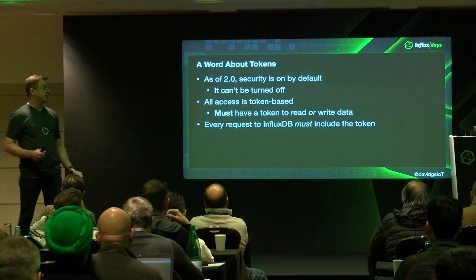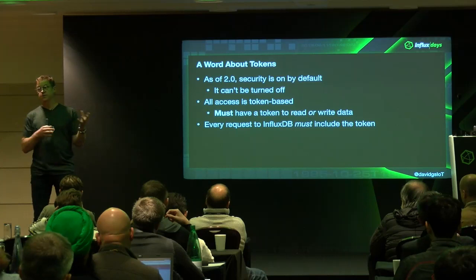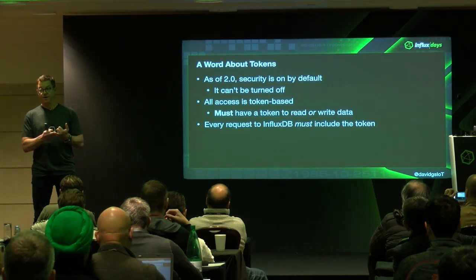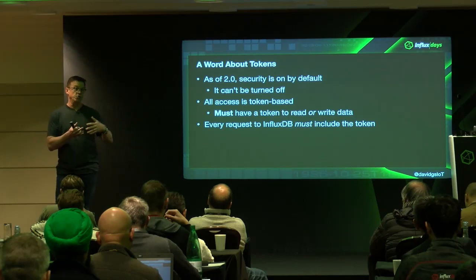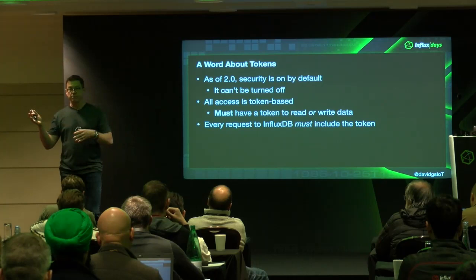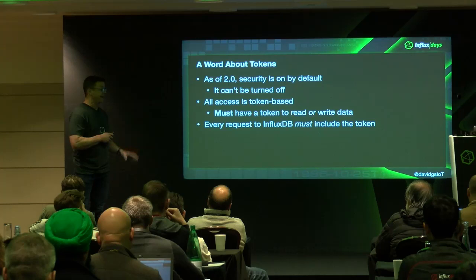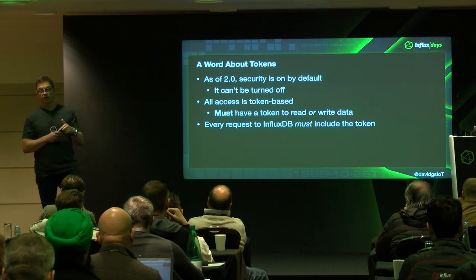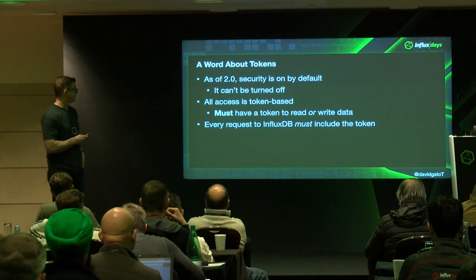Some really important points: as of InfluxDB 2.0, security is on by default and it can't be turned off. All access is token-based — any write or read to the database has to present a valid token or it will not succeed. You can generate different kinds of tokens: write-only tokens for clients that just stream data in, read-write tokens, and an uber token that can create measurements, create buckets, and delete things. Every single request to the database has to include a token, which is important for IoT access.